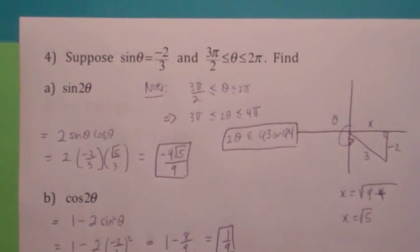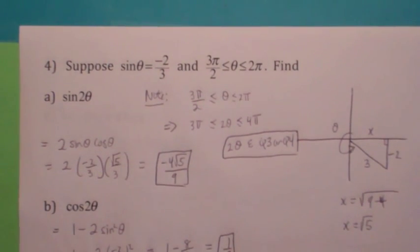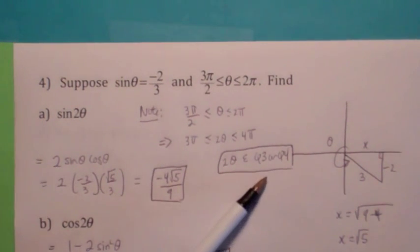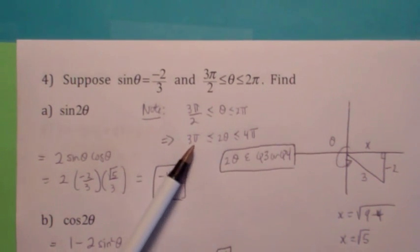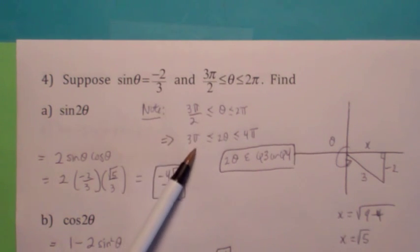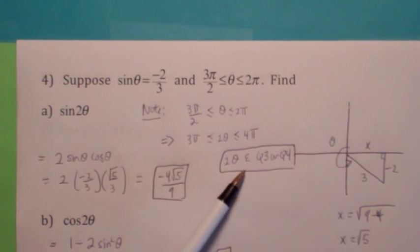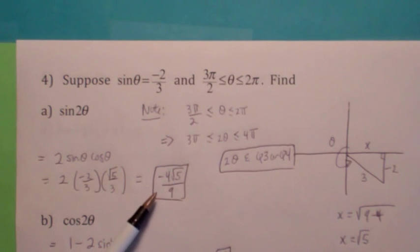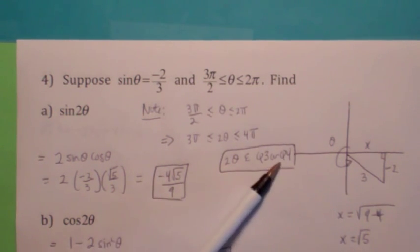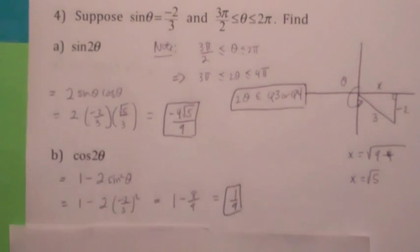What quadrant is 2 theta in? If theta is between 3 pi over 2 and 2 pi, then 2 theta is between 3 pi and 4 pi. Notice the sine is negative and the cosine is positive, so 2 theta is actually in quadrant 4.